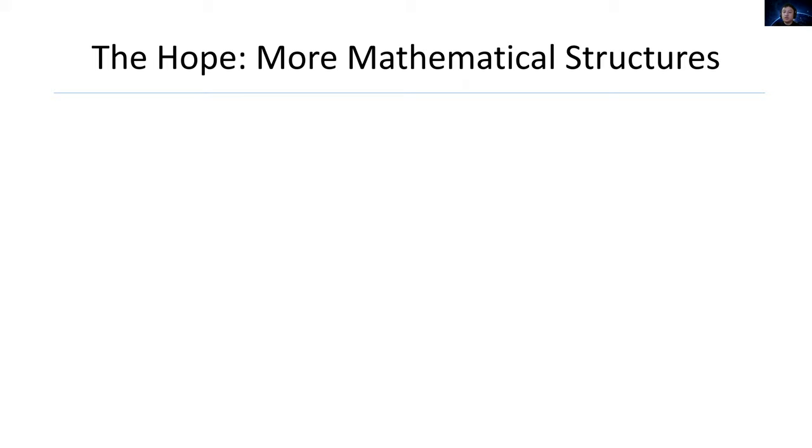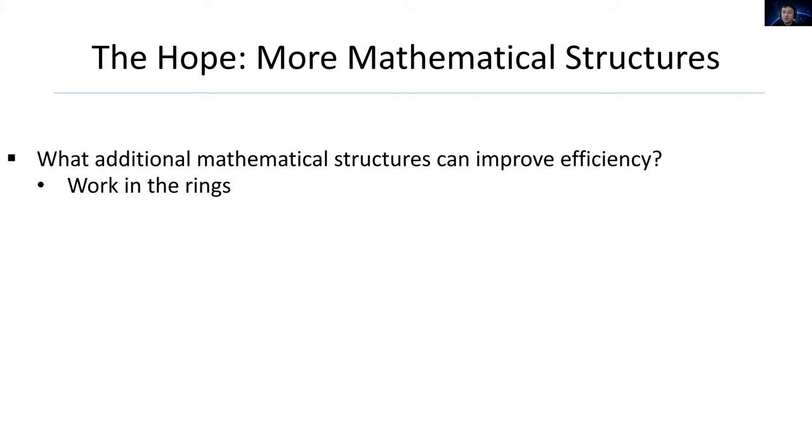The hope is we need more mathematical structures. So what additional mathematical structures can improve efficiency? We can work in the rings, and we can use rounding. So what do they mean?